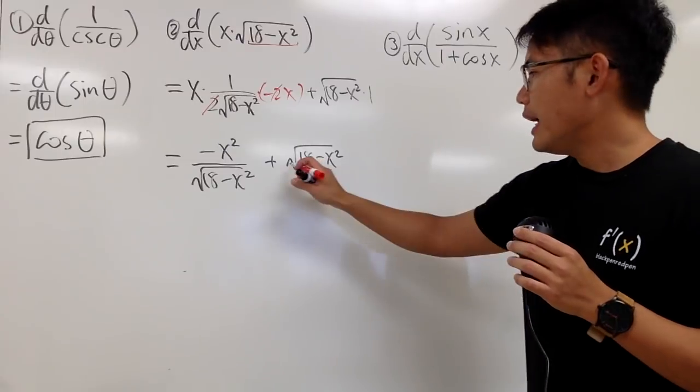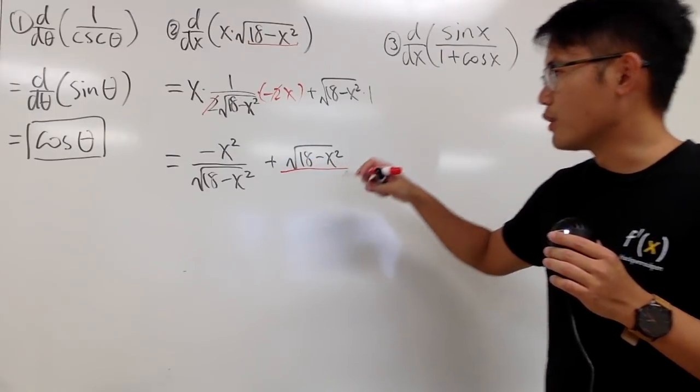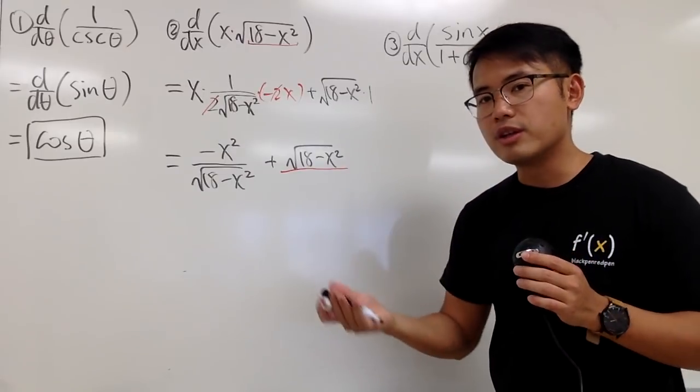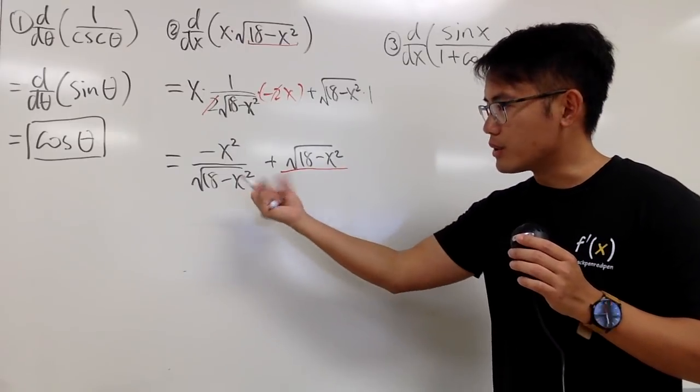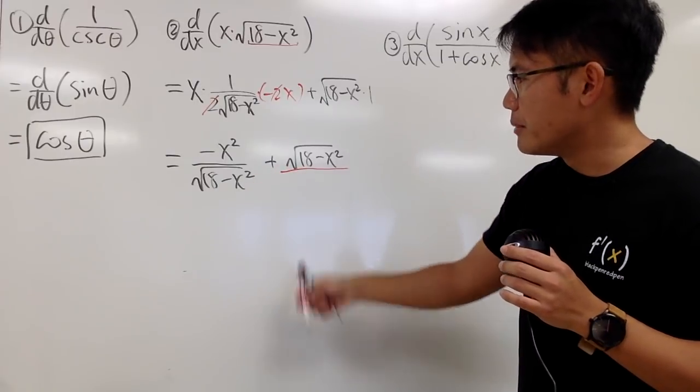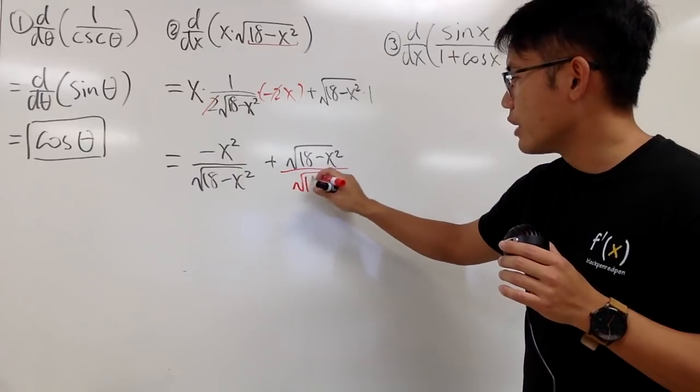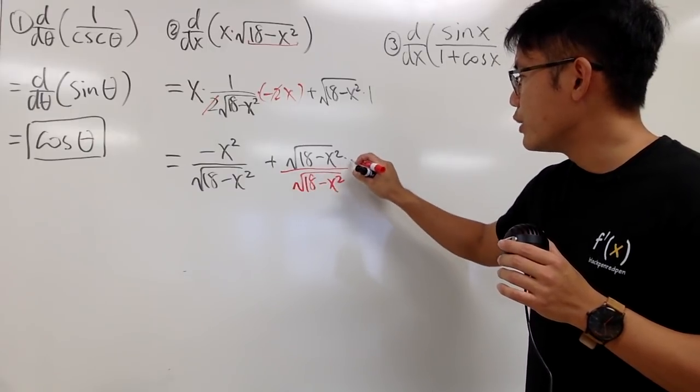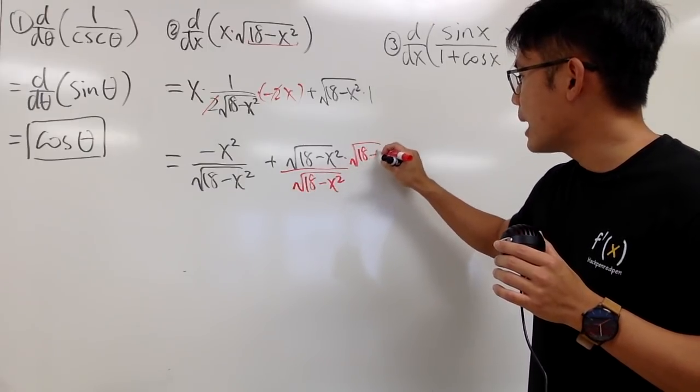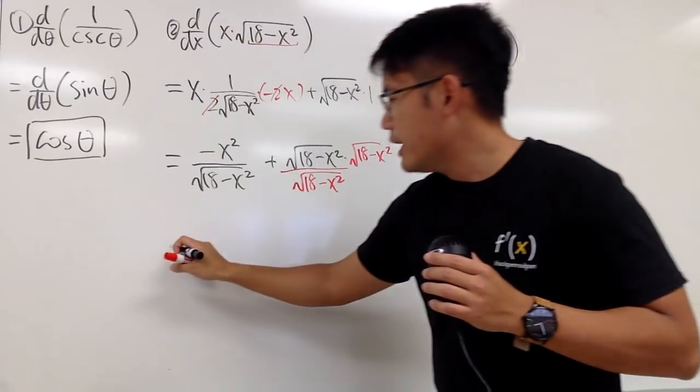Get the common denominator. And, in fact, we really want to do that because later on, you will see, if you want to talk about the critical values and things like that, you have to combine expressions. Anyway, to get the common denominator, I need this right here. So, I will multiply the bottom by square root of 18 minus x squared, and then do the same on the top. And, multiply the top and bottom by this.